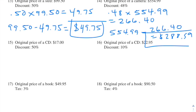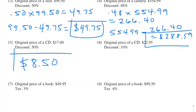Number fifteen: the original price of a CD is $17 and the discount is 50%. Like in problem thirteen, 50% is just half of the original price, so we end up getting $8.50 — because $8.50 is half of $17.